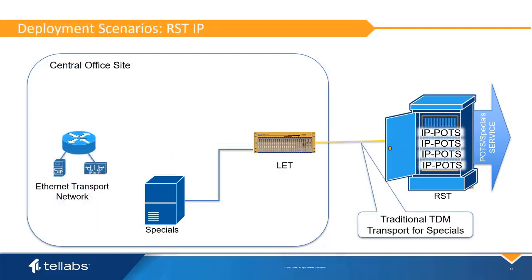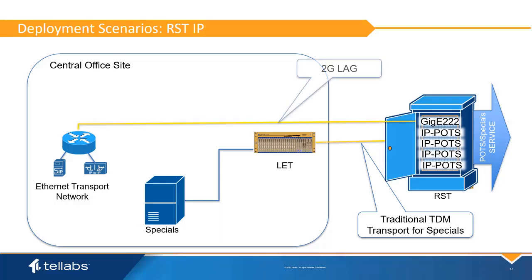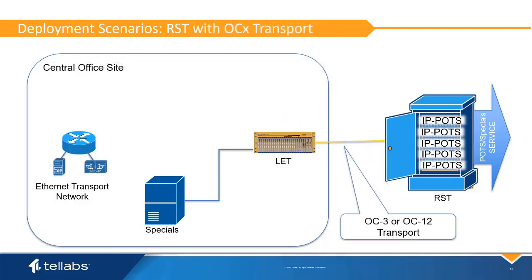If there is an existing RST with spare dark fiber, the RST can add a GigE card to one of the shelves and bring IP POTS VoIP traffic directly into the VoIP network — the simplest and most straightforward approach. OC3 and OC12 legacy ATM transport can be used if there is not enough dark fiber. The traffic from the IP POTS card uses an ATM cross-connect to connect traffic up to the LET, where it is cross-connected into a GigE card and sent into the VoIP network. This can also have significant cost savings at the expense of additional delay.